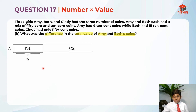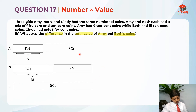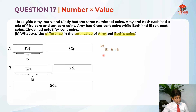For this we will use the same model. We are going to focus on Beth and Amy. We are asking about the difference in total value, and we know Amy has more money. So we take Amy minus Beth. We do 15 minus 9, which equals 6. This gives us two areas: 6 fifty-cent coins on Amy's side and 6 ten-cent coins on Beth's side.